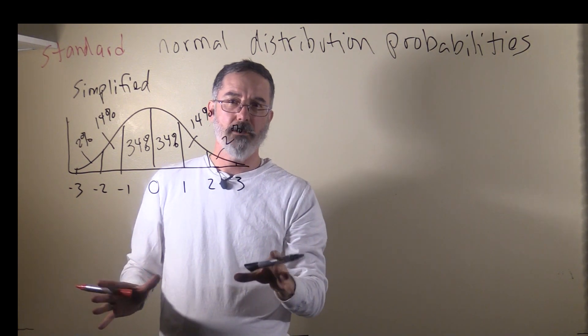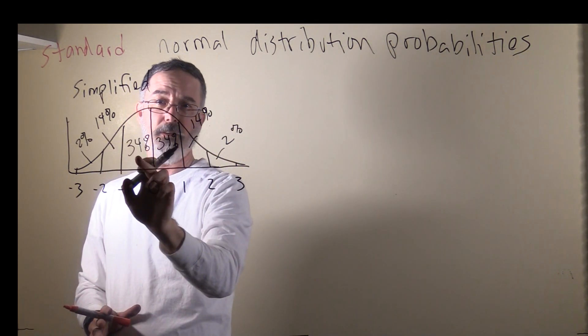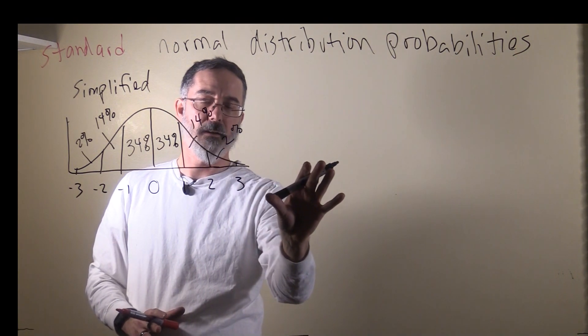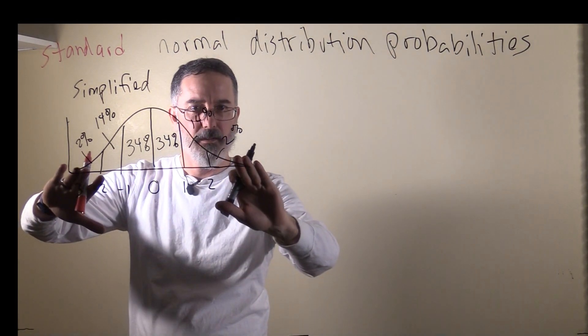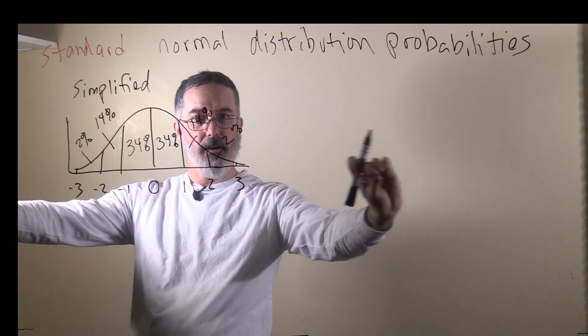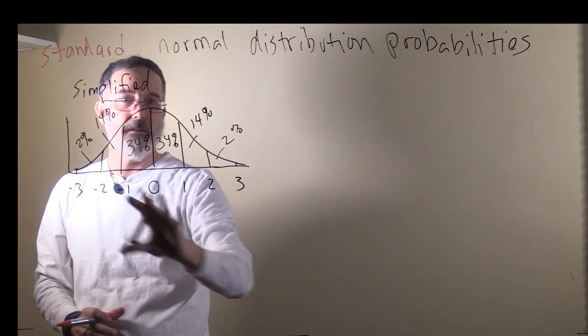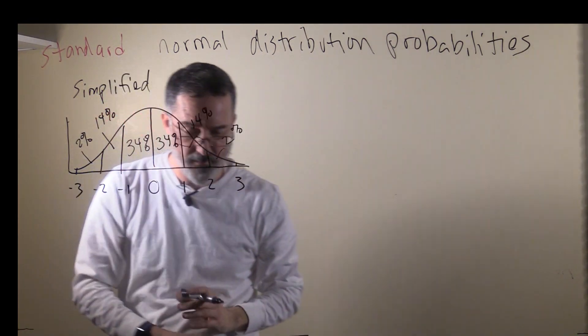With this approximation, we have a total of 100% of the area. In reality, there's more of the area beyond three, but in the simplification, we're going to ignore that. That's one reason it's simplified.